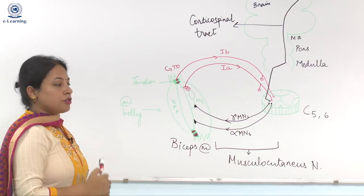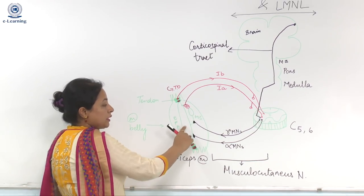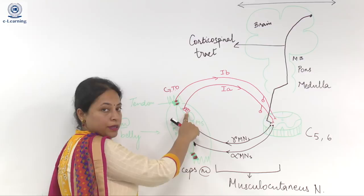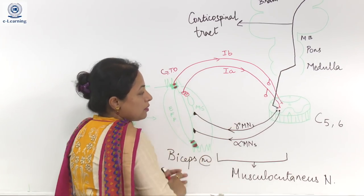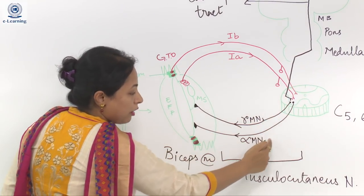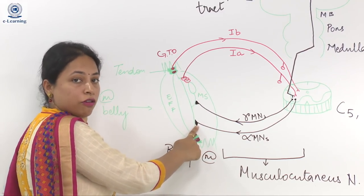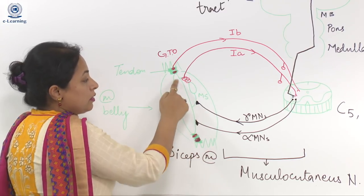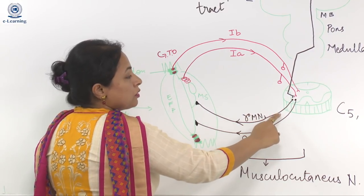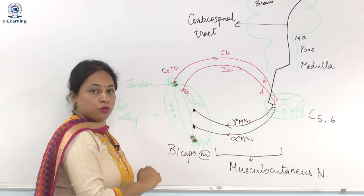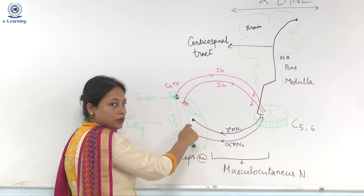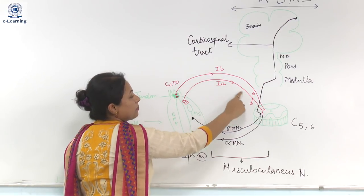Now let us understand the physiology. Whenever there is a stretch in the extrafusal fibres, that stretch is picked up by the muscle spindle. It is carried by the 1A fibres into the spinal cord, where they synapse with the alpha motor neurons. At the neuromuscular junction, acetylcholine is released, generating an action potential at the extrafusal fibre and the muscle contracts. The gamma motor neurons, under influence from supraspinal segments, also release acetylcholine and create a contraction in the muscle spindle, which is again taken up by the 1A fibres.